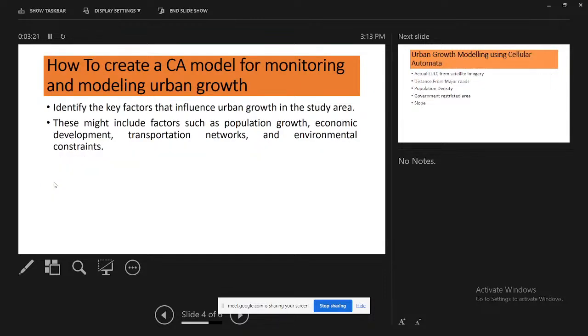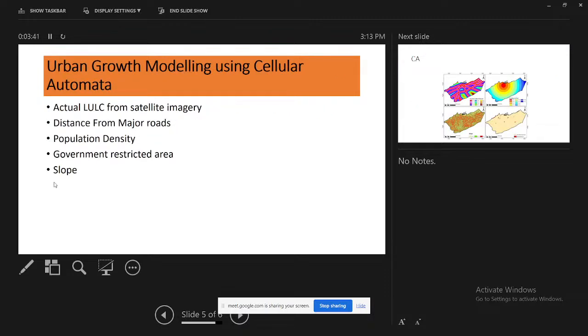How to create the CA model for monitoring and modeling urban growth? First, identify the key features that influence urban growth in the study area - features such as population growth, economic development, transportation networks, and environmental constraints. In the model I'll show you, I use all these factors. First, I create the actual land use land cover from